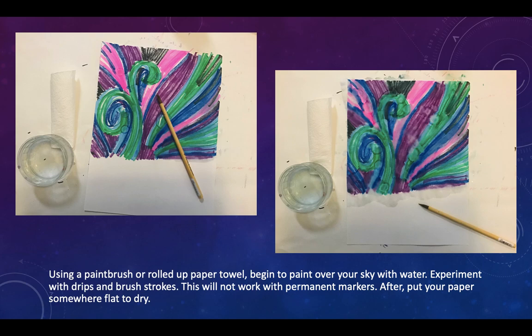Using a paintbrush or rolled-up paper towel, begin to paint over your sky with water. Experiment with drips and different brush strokes. This will not work with permanent markers — you have to have water-soluble kids markers in order for the water to work its magic.